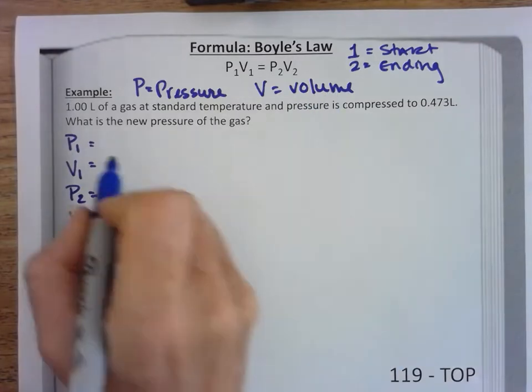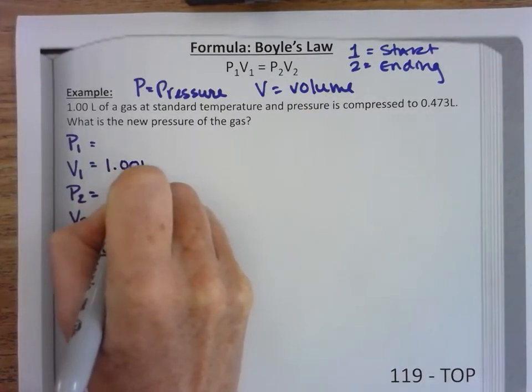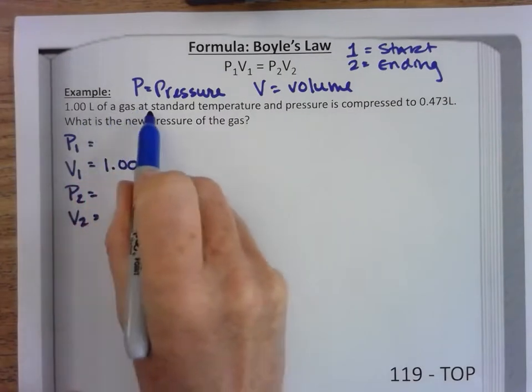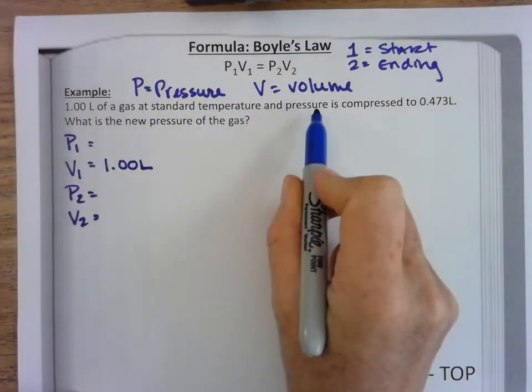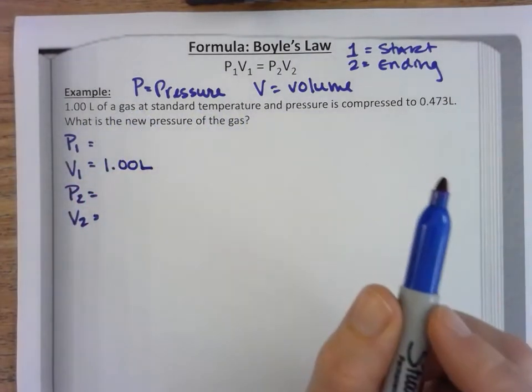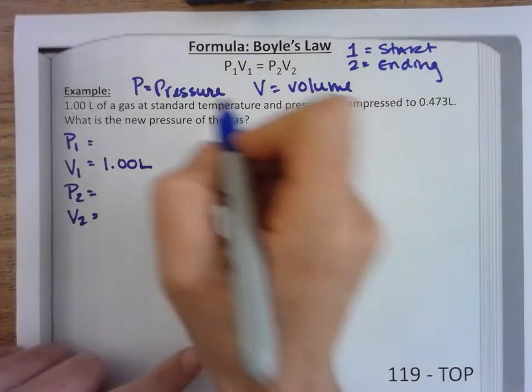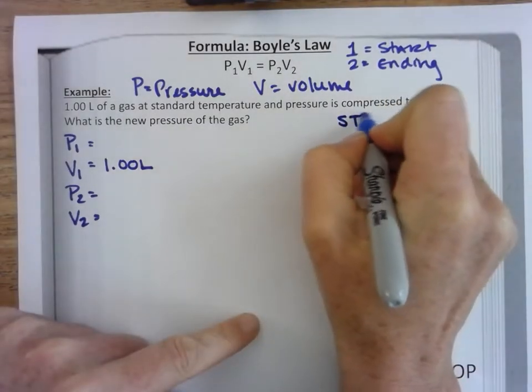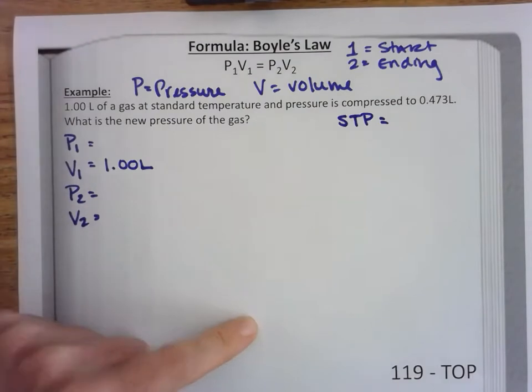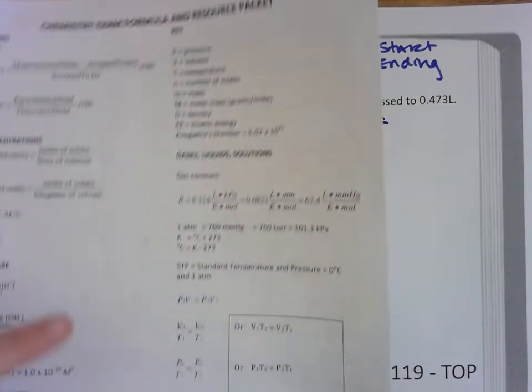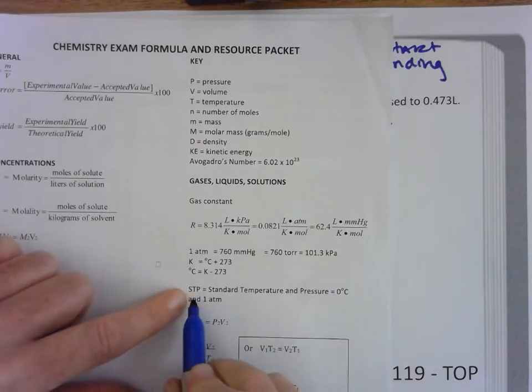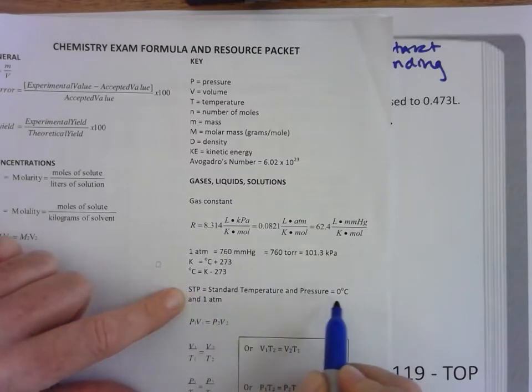It says one liter of gas at standard temperature and pressure. So what that is here: standard temperature and pressure is STP. Now you don't have to fret because back in your district packet they have STP right here, standard temperature and pressure, and they're telling you that it is zero degrees Celsius and one atmosphere.